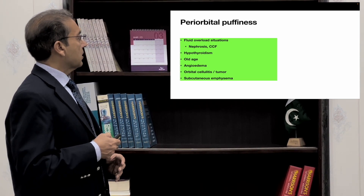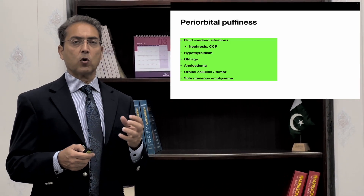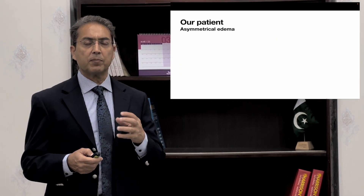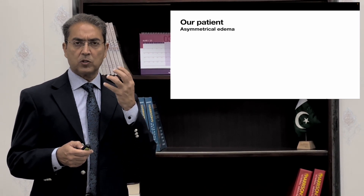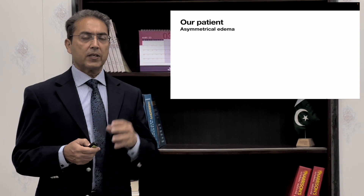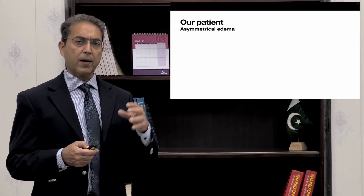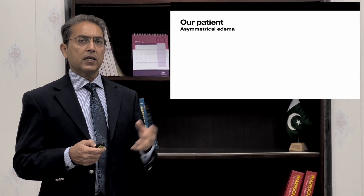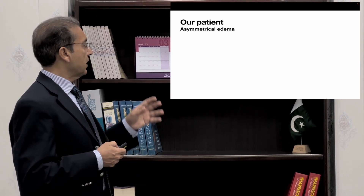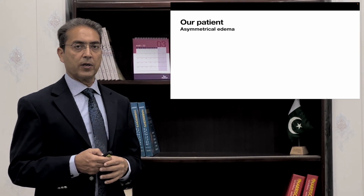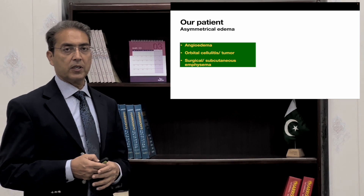What happened in this patient? This patient had asymmetrical edema. Patients who have fluid overload, hypothyroidism, or puffiness due to old age generally have symmetrical edema — the swelling is on both sides. But in this case, the left side is affected more than the right side. This asymmetry can be seen in orbital cellulitis, orbital tumors, and in patients who have surgical or subcutaneous emphysema.